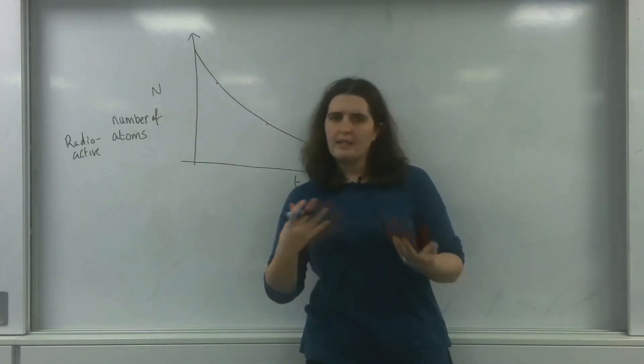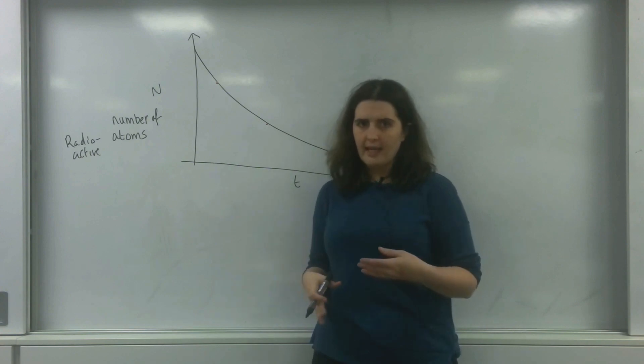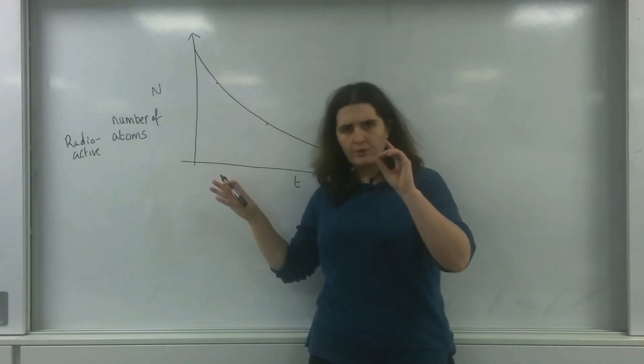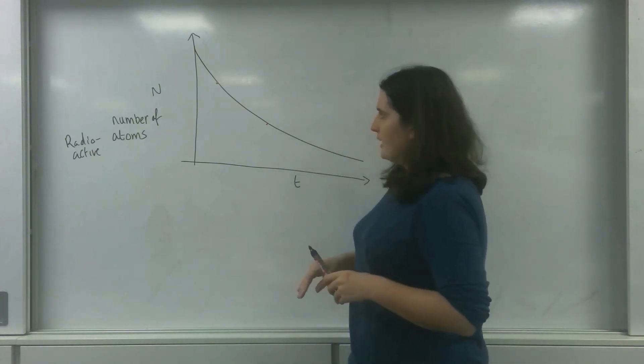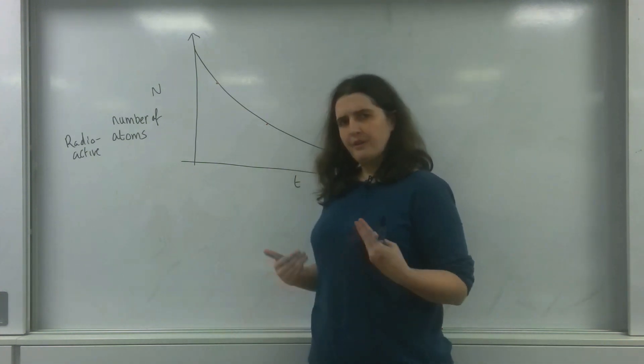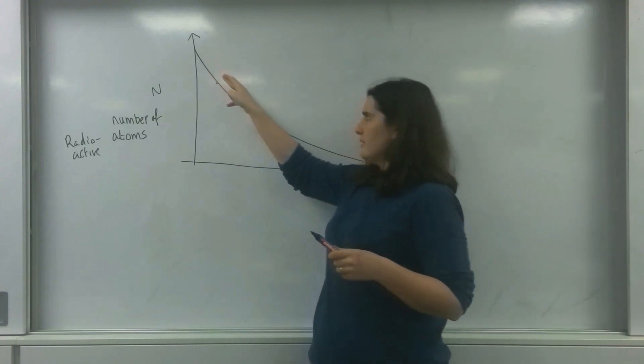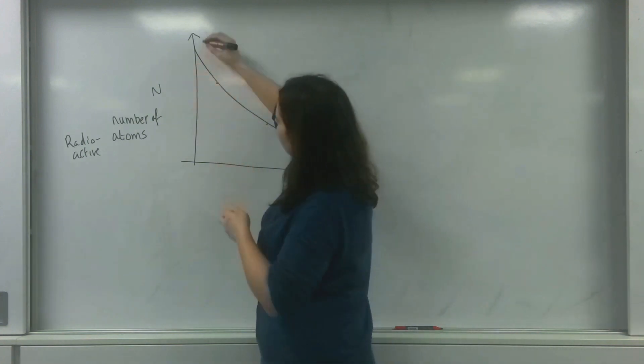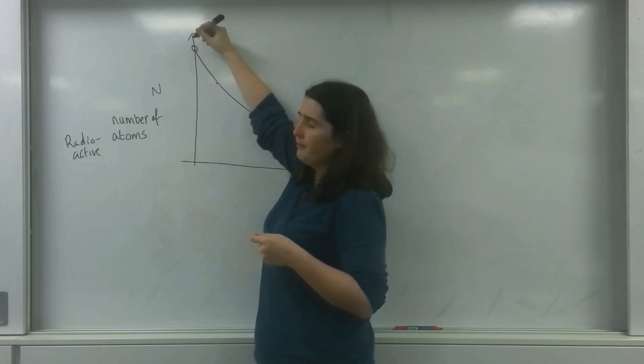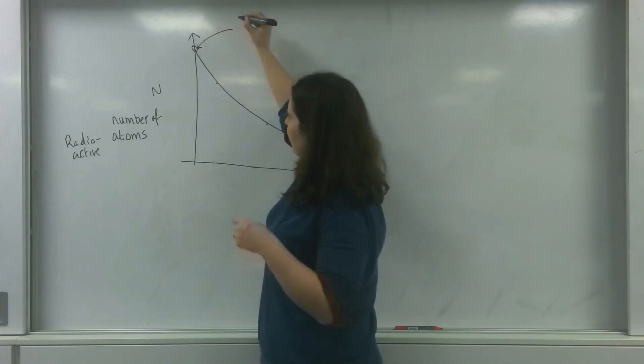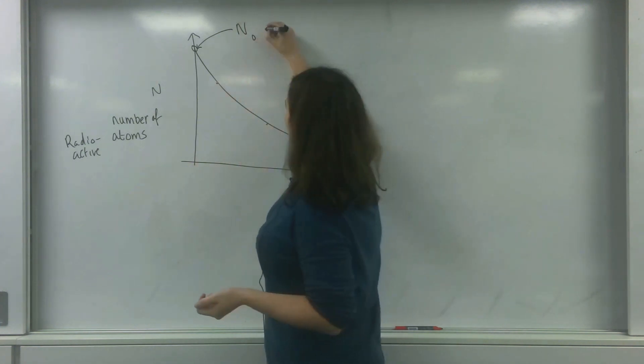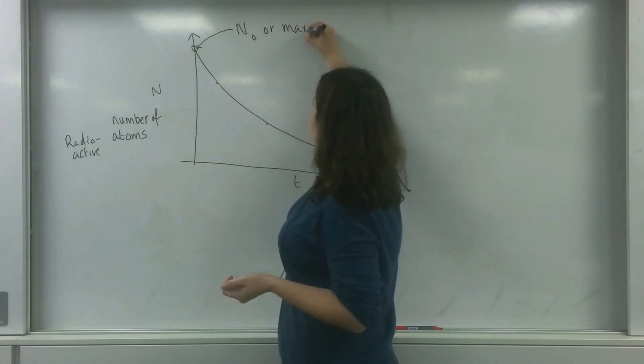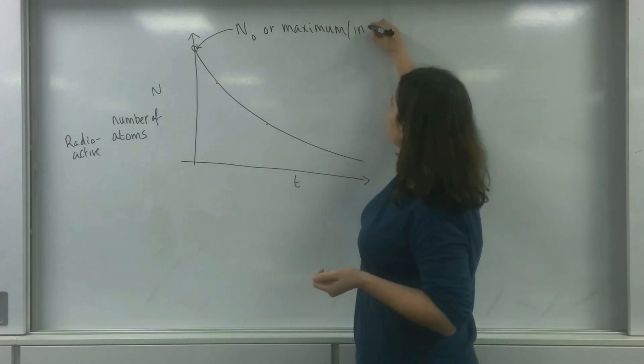What happens is that uranium 235 or something will decay, and it's the number of those atoms that are left over time. The curve starts here at this point, and this is what we call n nought, or the maximum stroke initial amount.